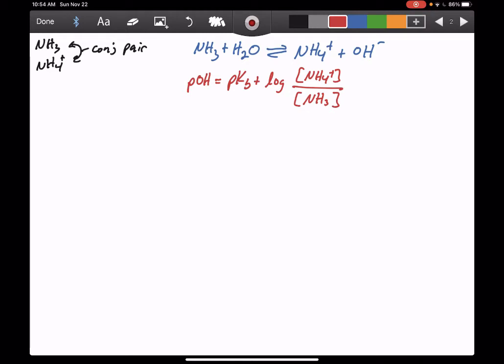Now, we have the value of the KB given in the problem, so we can find the PKB. And we are given concentrations of NH4+ and concentration of NH3. However, the one thing that we have to take into account is the fact that we mixed two solutions together and so we do have a dilution effect. And so the concentration of NH4+ is going to be different after we mix the solutions, as is the concentration of NH3. So we have to calculate the new concentrations of NH4+ and NH3 in the new solution that's been mixed together.